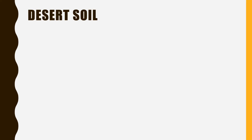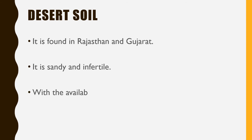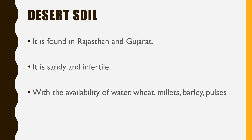The last kind of soil is desert soil. Desert soil is found in Rajasthan and Gujarat. This soil is sandy and infertile — it has a sandy texture similar to sand and is very infertile. If water is available, some crops can be grown here such as wheat, millets, barley, pulses and cotton, but only when water is available.